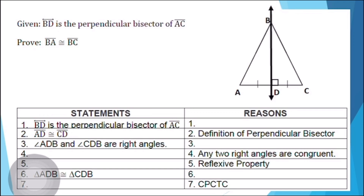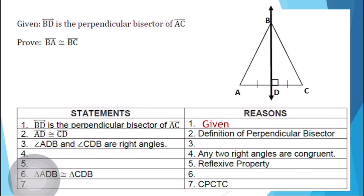For our first statement, line BD is the perpendicular bisector of line segment AC. The reason is given. For our second statement, line segment AD is congruent to line segment CD, and the reason is the definition of perpendicular bisector. For our third statement, angle ADB and angle CDB are right angles, and the reason is also the definition of perpendicular bisector.